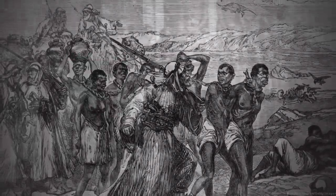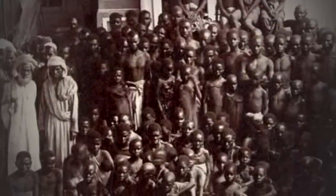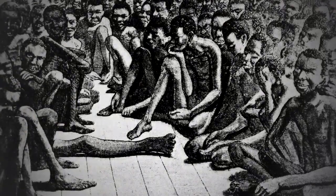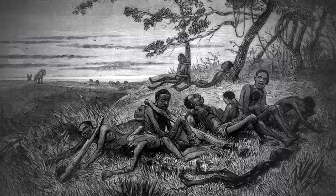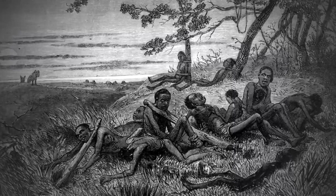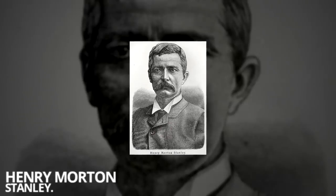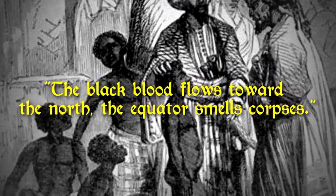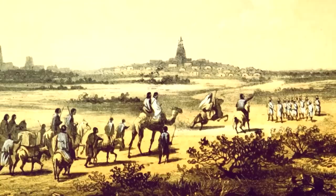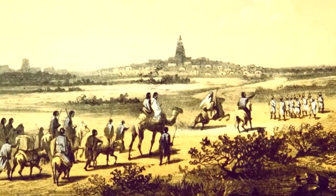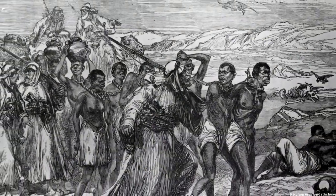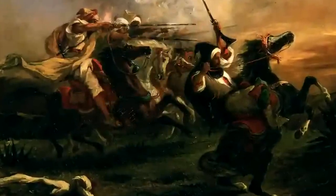When it comes down to it, history is full of many dark spots that are too often ignored. The treatment of the African people during the Arab slave trade is just one of those dark times. The murder of millions of people has largely been forgotten by many Americans and Europeans, and it shouldn't be anymore. A Welsh explorer named Henry Morton Stanley, who saw the slave trade firsthand in the 1800s, said it best: 'The black blood flows toward the north, the equator smells corpses.' Thank you for watching this episode of Crazy History. Let us know in the comments if you had ever heard of this other massive slave trading network, and be sure to like and subscribe so you don't miss any videos in the future.